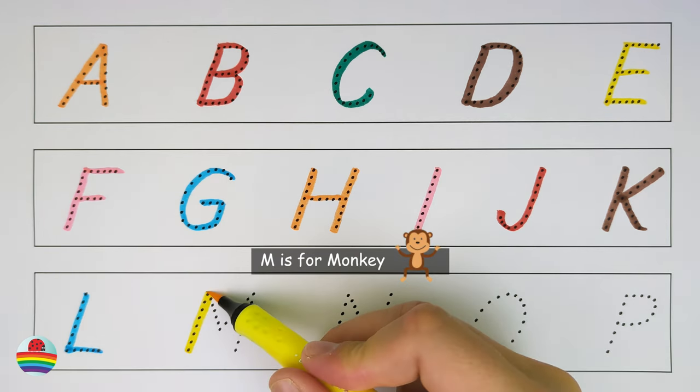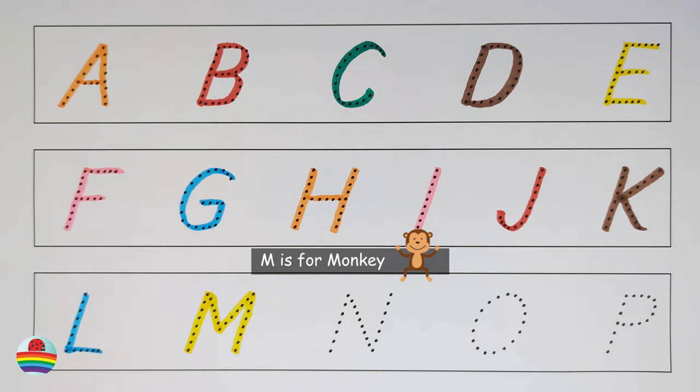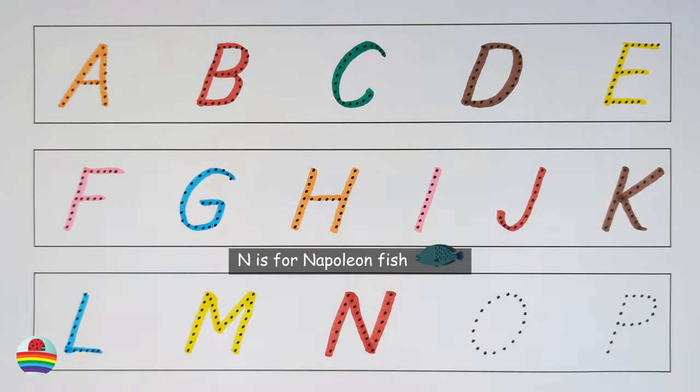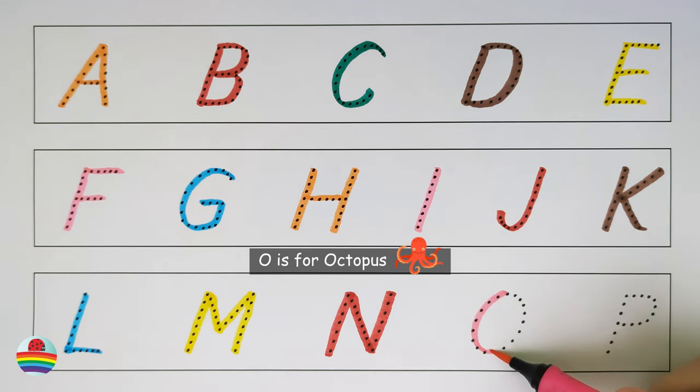M. M is for monkey. N. N is for napoleon fish. O. O is for octopus.